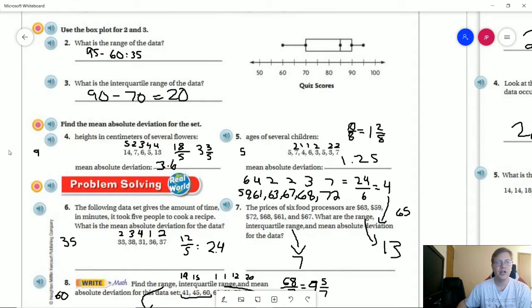For number four, our mean is nine. And so we get an amount of deviation of 18 divided by five data points, which gives us three and three fifths or 3.6 centimeters.